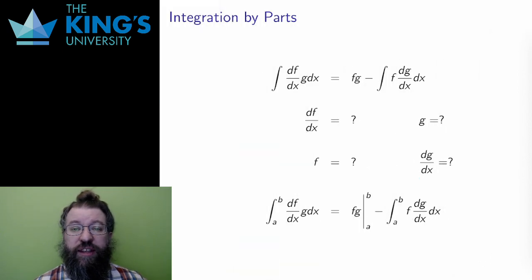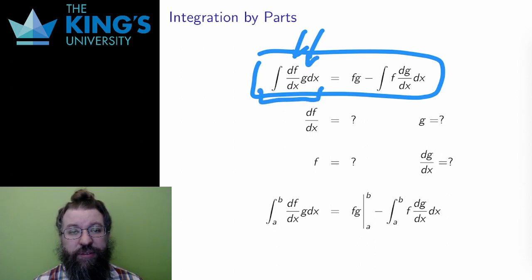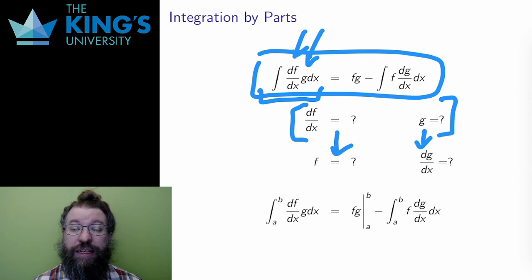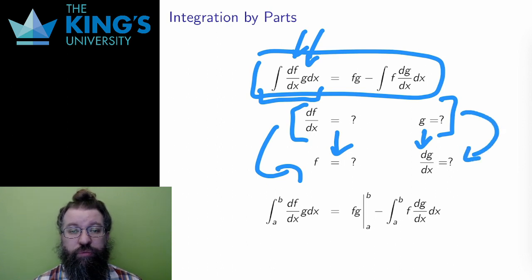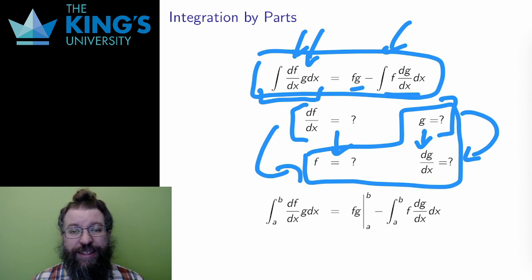So how do I actually use this new rule, this integration by parts? If I have an integral of a product, I try to see if I can make it look like the left side of this equation. Is there a piece of the integrand that can serve as df/dx — the derivative of something? And is there another piece that can serve as g? If I can make that work, I'll label the two pieces, then calculate f and dg/dx, since both are needed for the right side. I'll need the antiderivative of df/dx for f, and the derivative of g. Then I'll use these three pieces to create the right side, and the result is a function minus a new integral. I haven't actually finished the integration, but the hope is that the new integral will be easier than the original — something that can actually be solved.